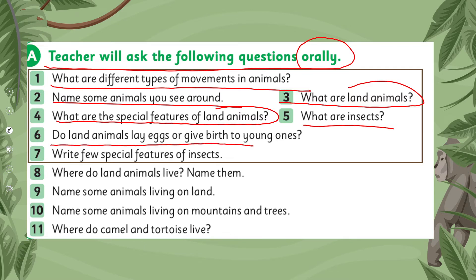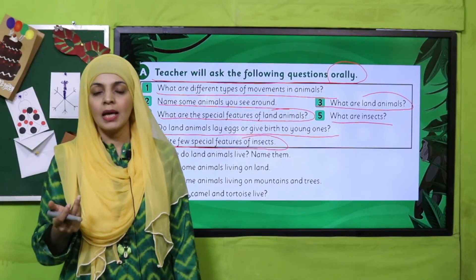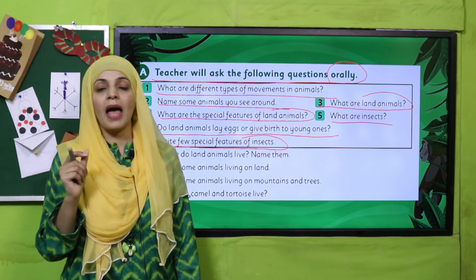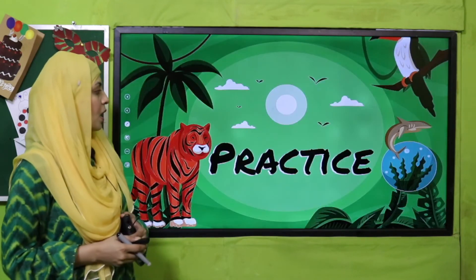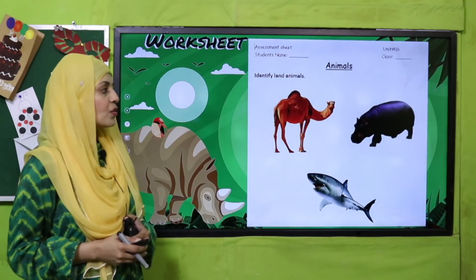Do land animals lay eggs or give birth to young ones? Land animals both lay eggs and give birth to young ones. A few special features of insects: insects have two or more legs, they are very small, and they lay eggs.